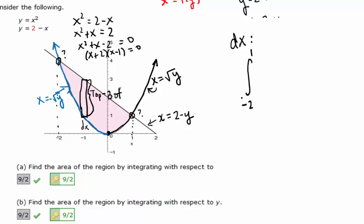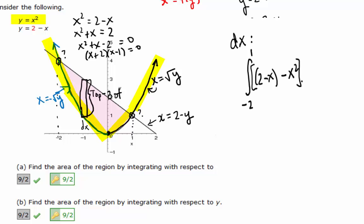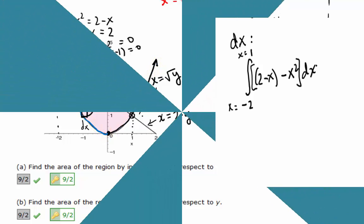Top minus bottom — which function is on top? y equals 2 minus x. So we're going to say 2 minus x minus x squared. Notice we're using all x's inside the integrand, and the bounds are x values as well, because we're integrating with respect to x.